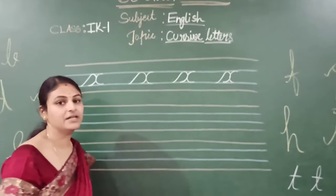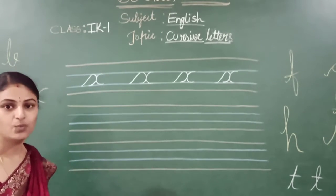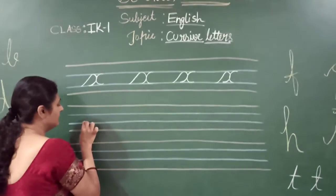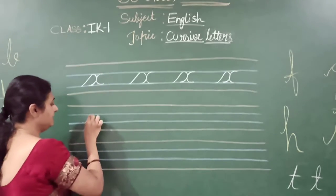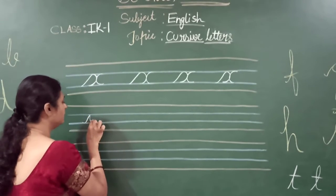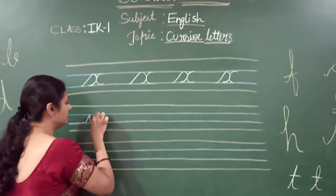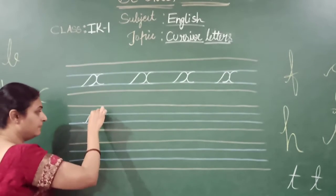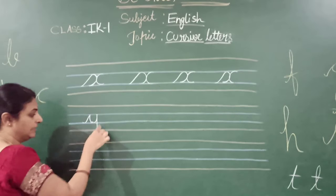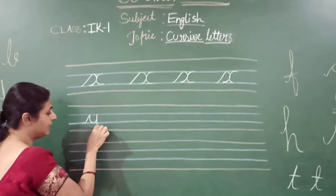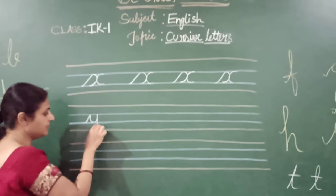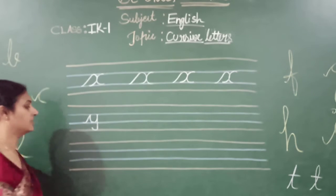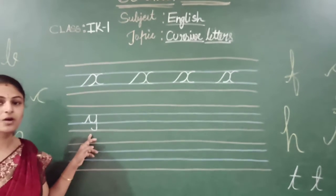After X, which letter will come children? Letter Y. Now make a slanting line. How will I write a U? This is how we will write a U. Similarly, we just write a U. Come down till this last fourth line, straight line. Here, make a curve.